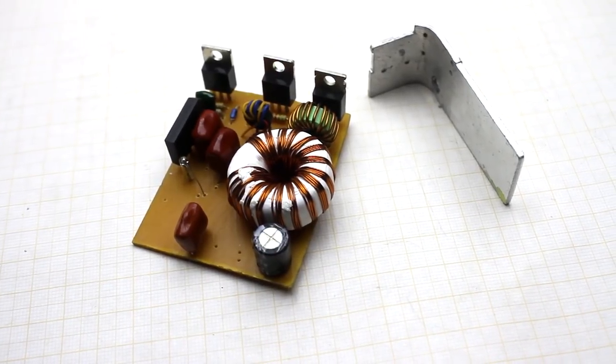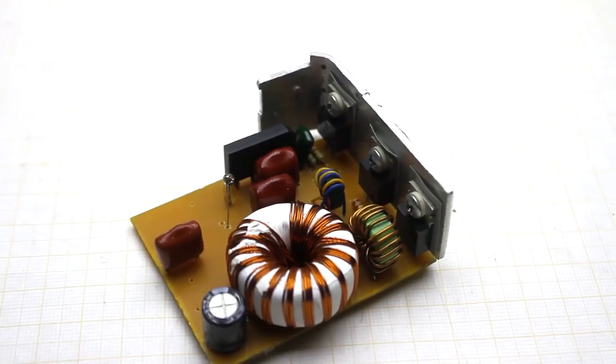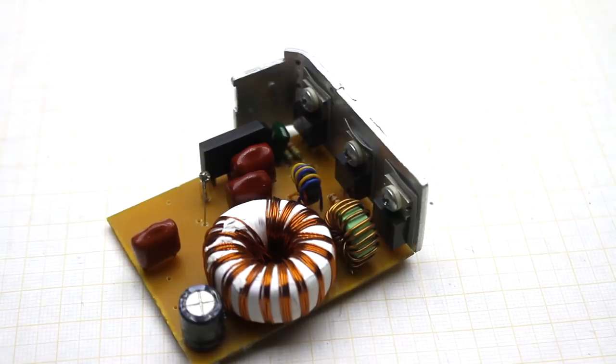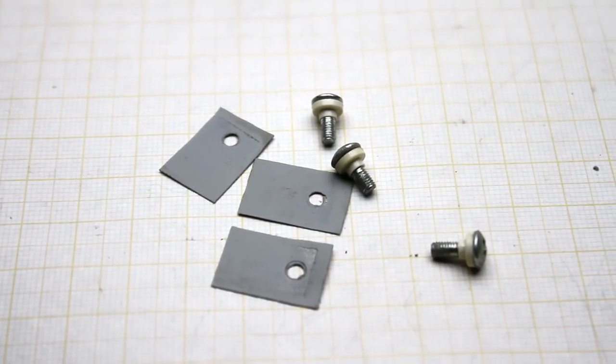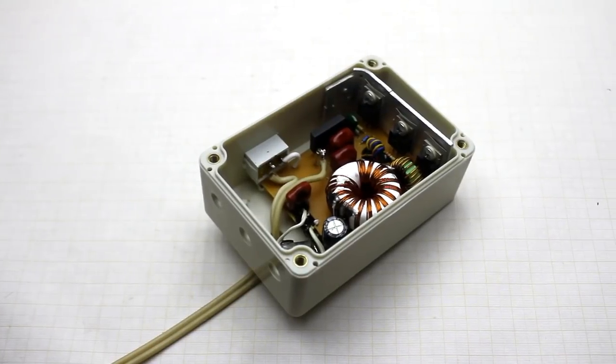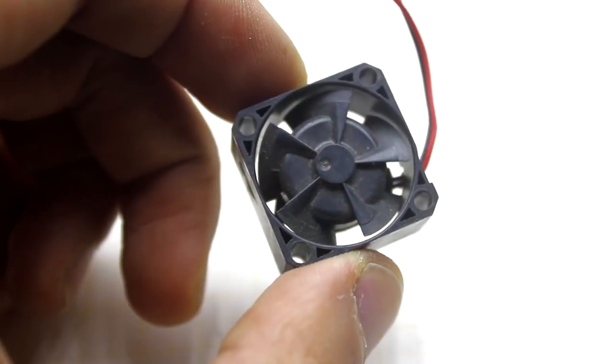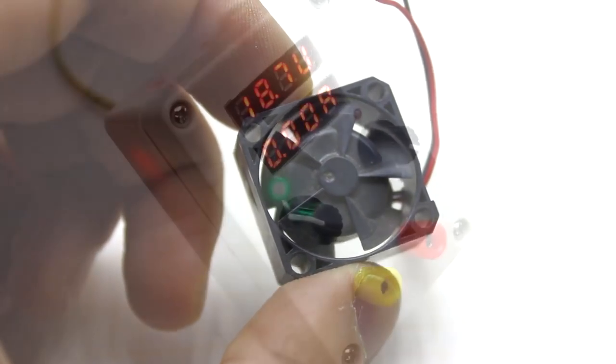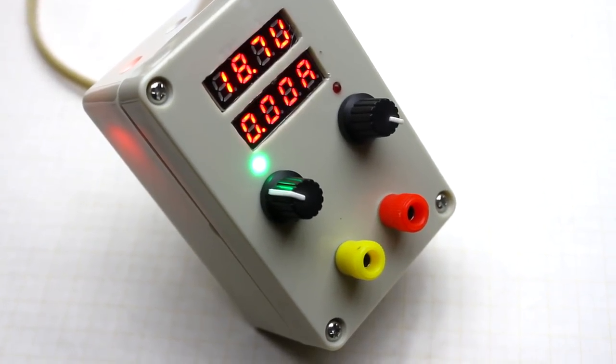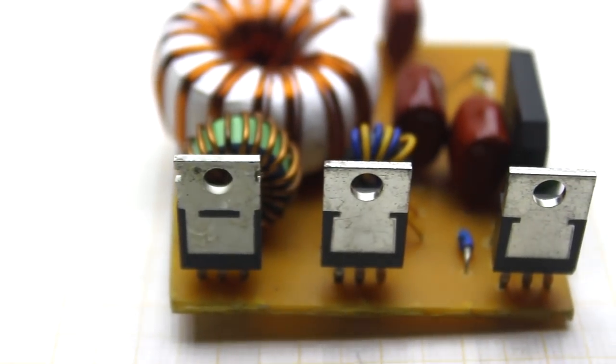Power transistors and rectifier are installed on a small heatsink, and they must be necessarily isolated from the heatsink. Power components heat up only at maximum currents. First, I intended to add a fan, but later I noticed that heating is stable, and doesn't go out of tolerance range.